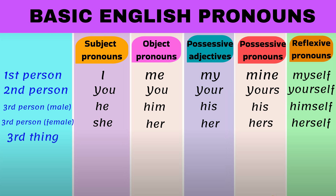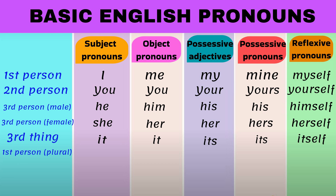Pronouns for third person thing: It, It, Its, Its, Itself.